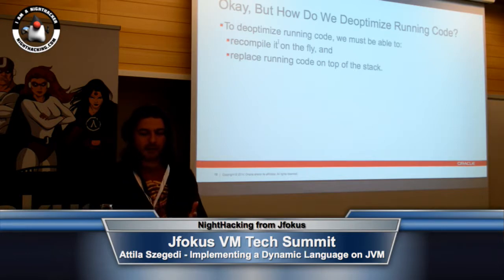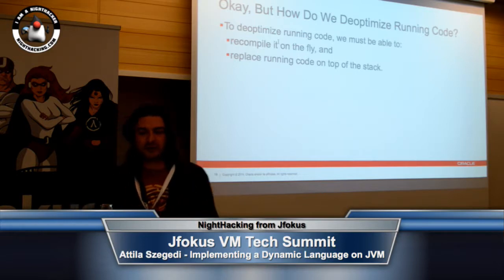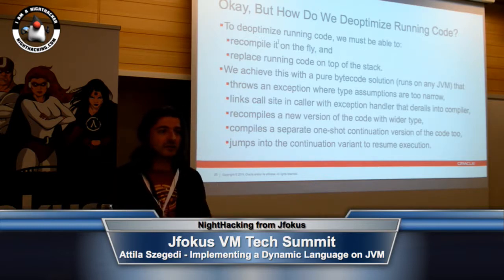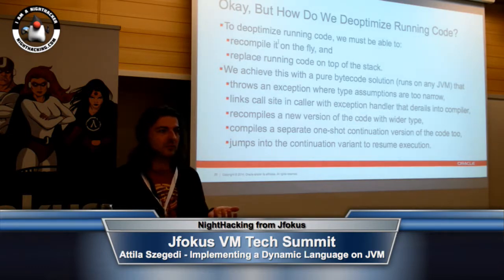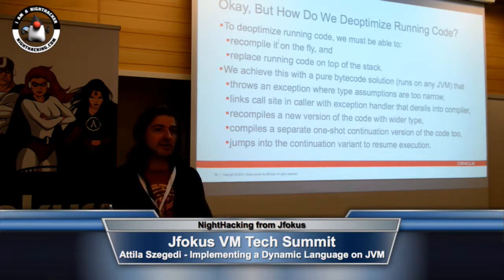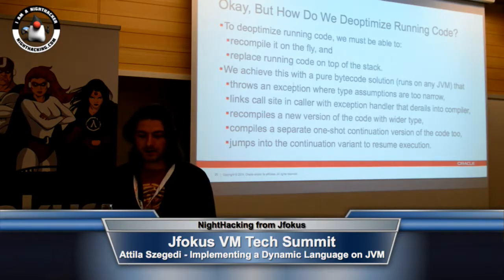In order to de-optimize running code, we need two requirements: we need to recompile it on the fly, and we need to be able to replace running code on top of the stack. The great thing is that we actually achieved this with a pure bytecode solution — this runs on any JVM. We didn't have to resort to any VM-level tricks. This is not Oracle Nashorn, this is basically OpenJDK Nashorn. If you took the source code of Nashorn and put it on a non-OpenJDK VM that nevertheless has full Java 8 specification implemented, this would just work.